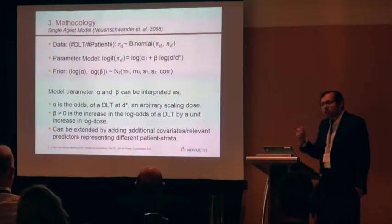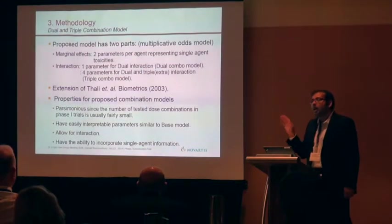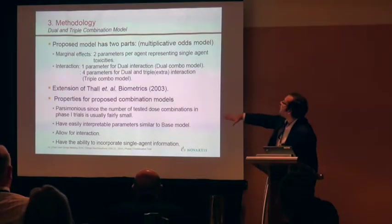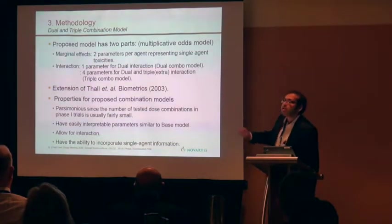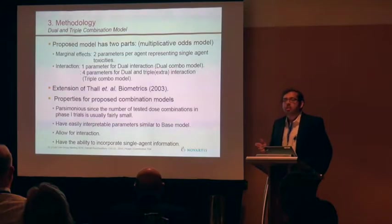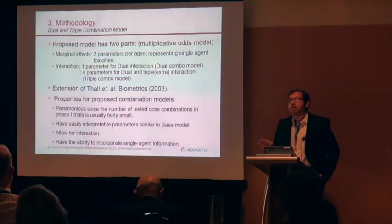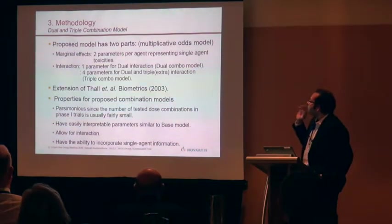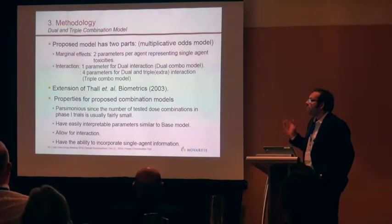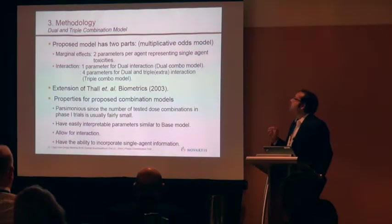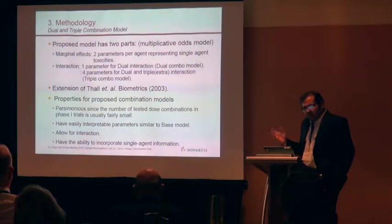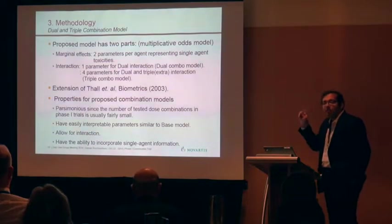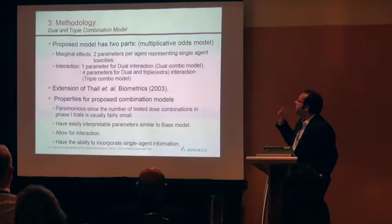Once you can separate them, you go back to the single-agent model to model the marginal parts, but the model is still incomplete because you need to model the interaction. For a dual combination it's easier — you have only one interaction term, so adding one parameter handles it. For a triple combination it gets much harder because you have dual interactions and triple interactions. To cover that surface, we found a four-parameter model which fits the surface much better. For triple combinations we are still in a learning phase. The fundamental idea extended from Peter Thall's model, which uses a six-parameter model for dual combinations.